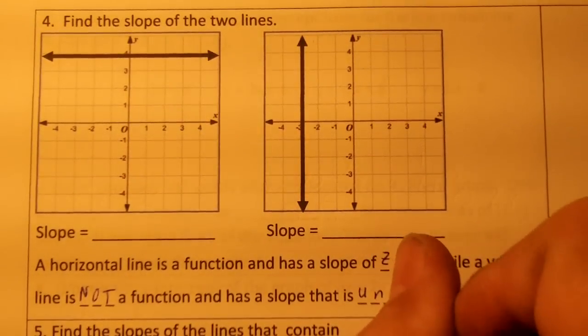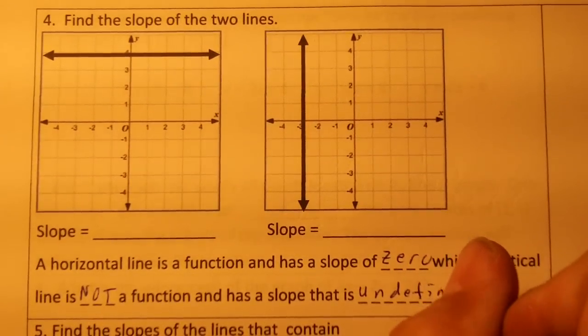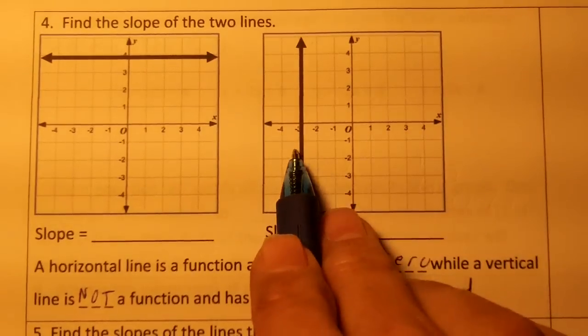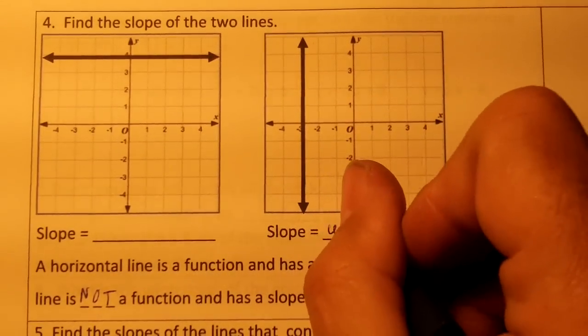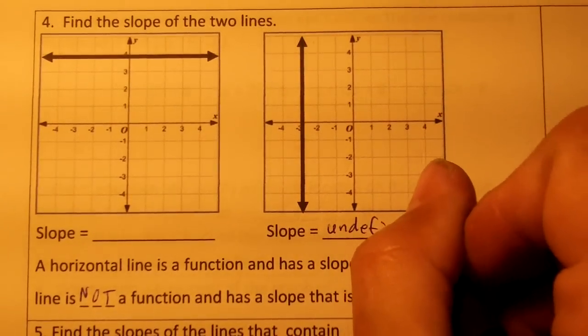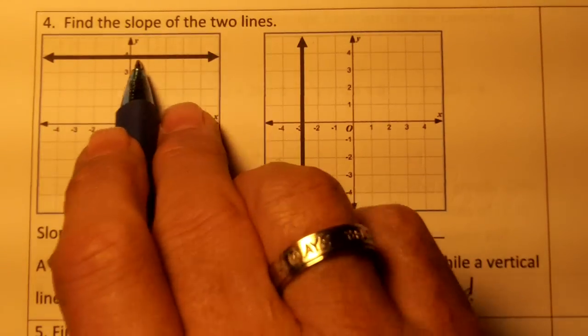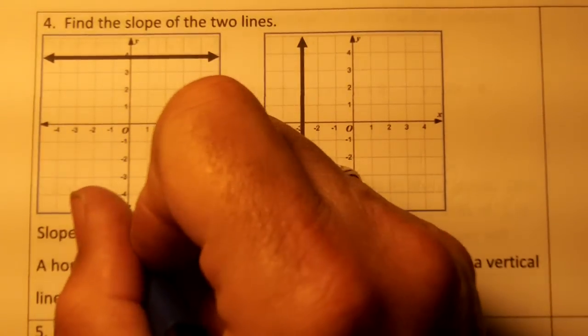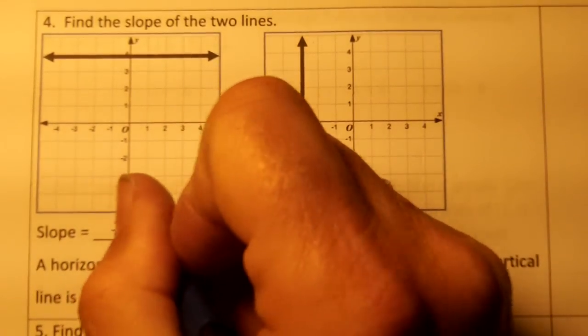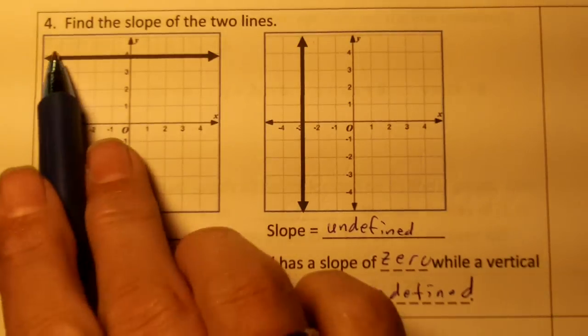This is something you just have to memorize. This one has a slope that is undefined; it is not a function. This one has a slope—you do not go up or down, you just stay flat—so it has a slope that is equal to zero.